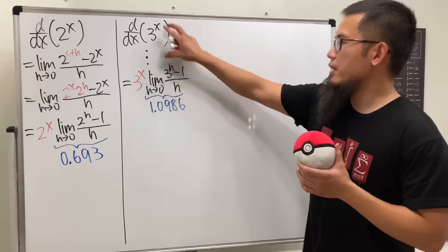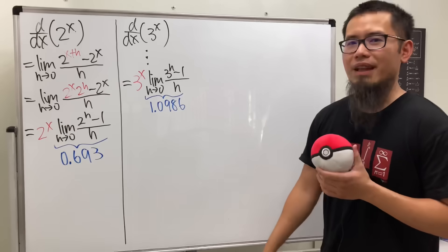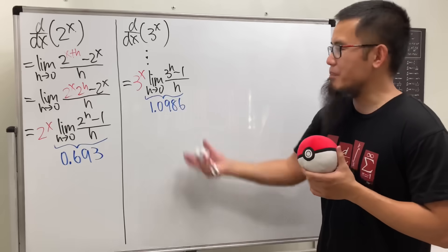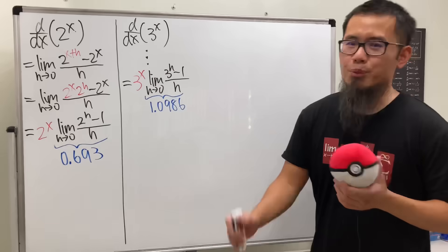And we can do the same thing. And let me tell you this number is approximately 1.0986. Unfortunately, this still has like a number. So, not so preferred, right?